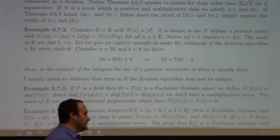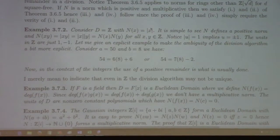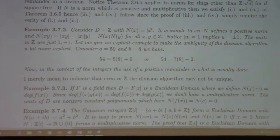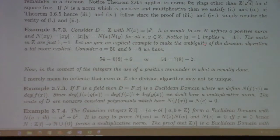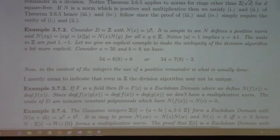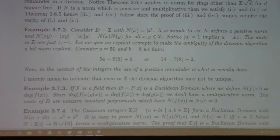The integers are a Euclidean domain. Units in the integers are ±1, the elements with norm 1. This also means the division algorithm is not unique: the remainder can be chosen positive or negative. We traditionally choose positive remainders, but from the viewpoint of abstract algebra, that's just an ad hoc convention.